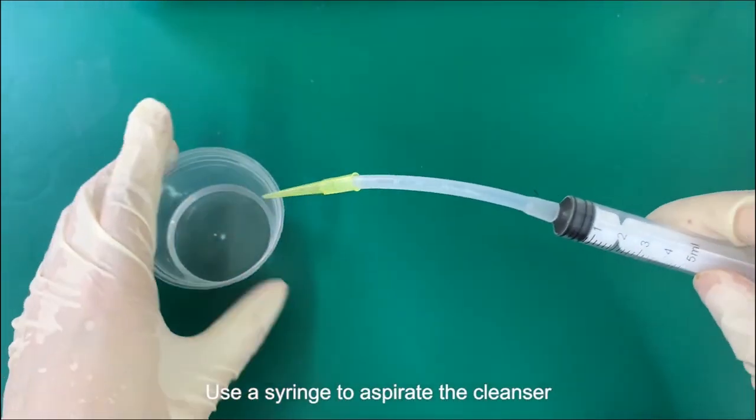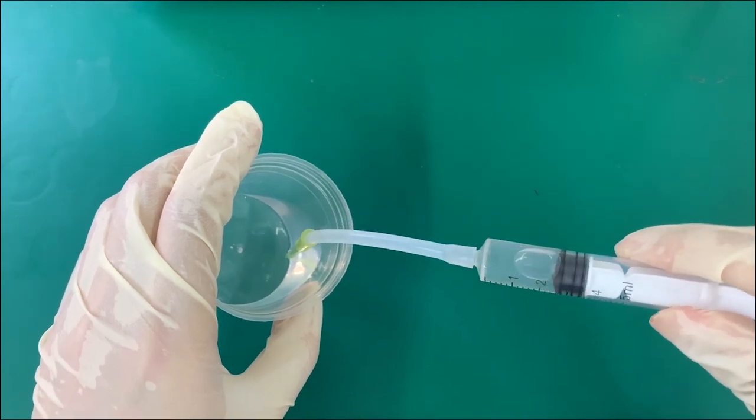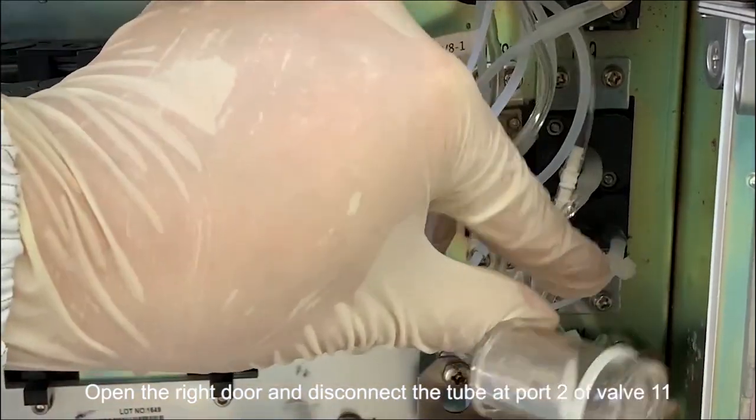Use a syringe to aspirate the cleanser. Open the right door and disconnect the tube at port 2 of valve 11.